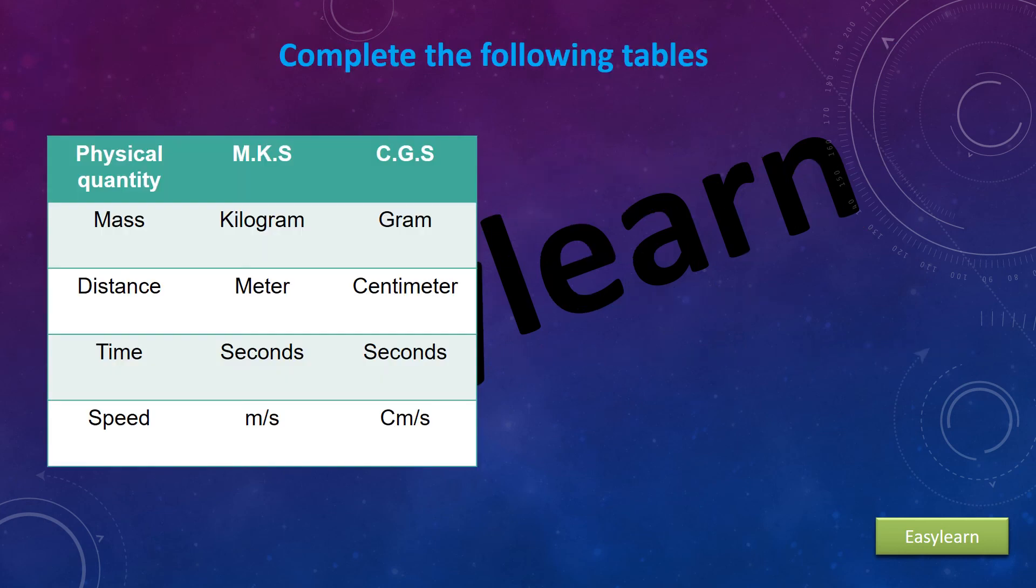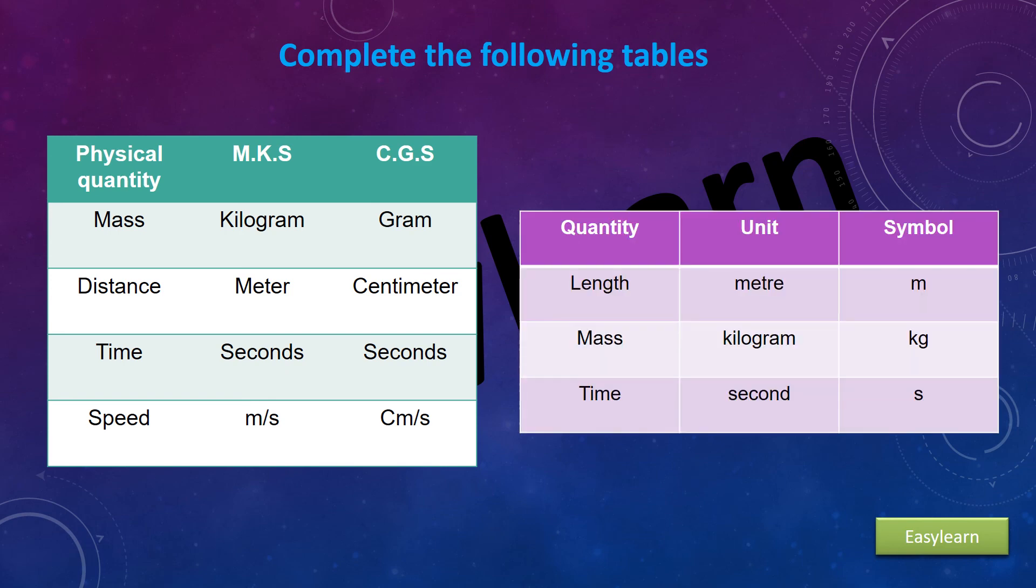Complete the following tables. Physical quantity, mass. In the MKS system, the unit is kilogram. In the CGS system, it is gram. Distance: meter, centimeter. Time: seconds, seconds. Speed: meter per second and centimeter per second. Quantity length, unit meter, symbol m. Mass, kilogram, kg. Time, seconds, s.